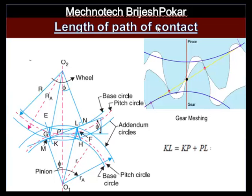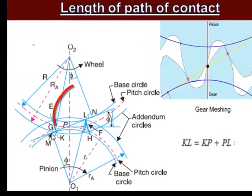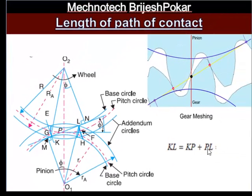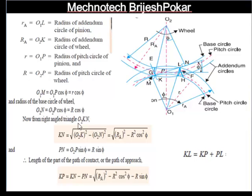Hello friends, welcome to Magnetitech YouTube channel. Our today's topic is length of path of contact. If you see this figure, from point K to point L, if we draw the line, this is called the length of path of contact. So basically KL is equal to KP plus PL — that is the length of path of contact.